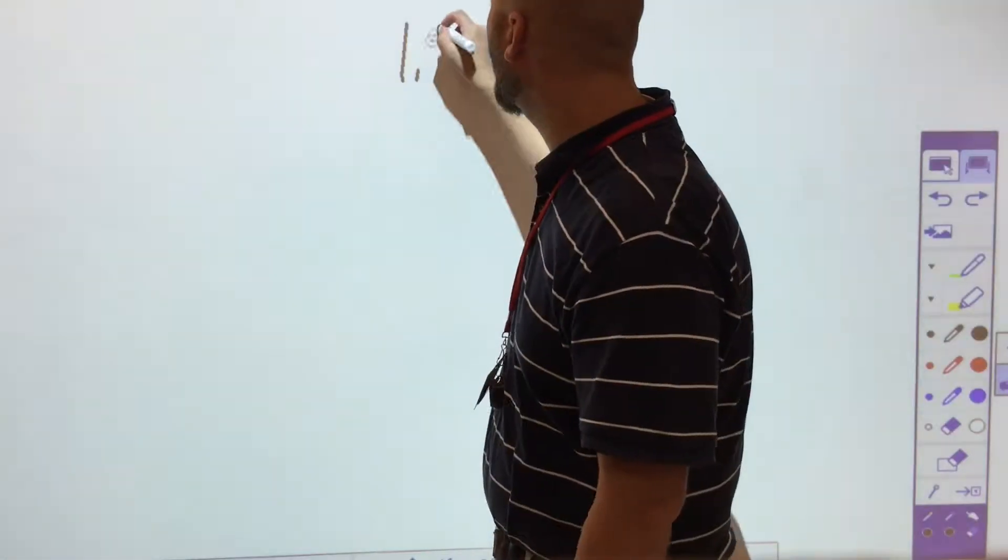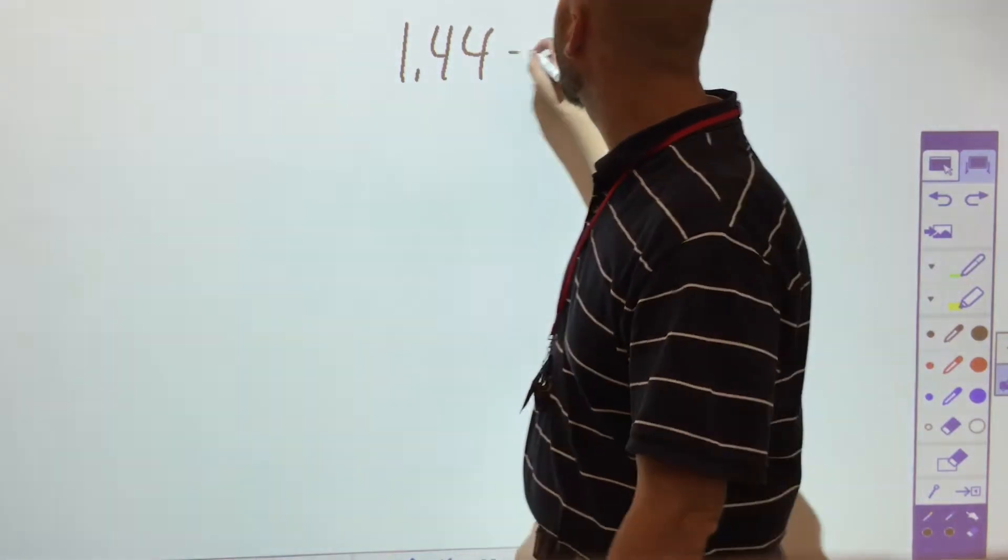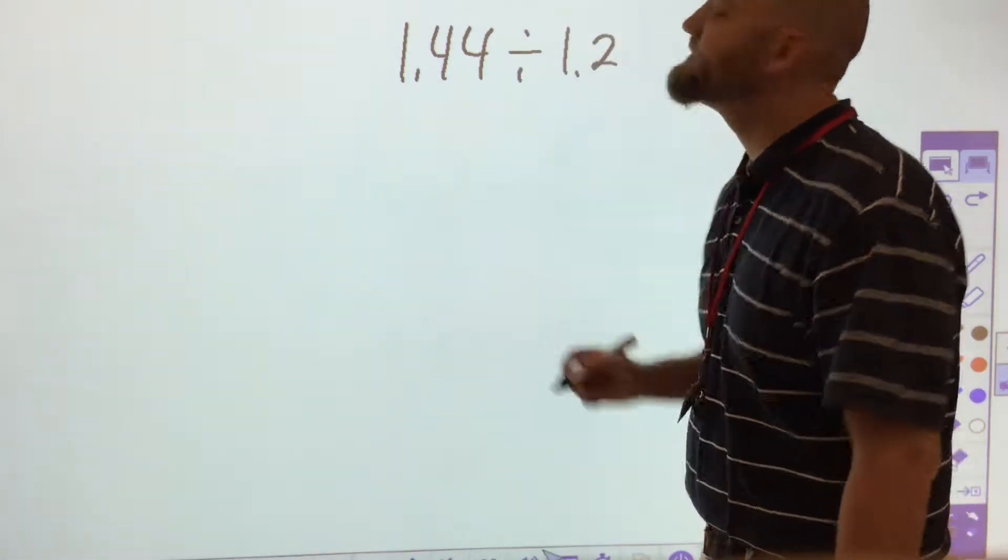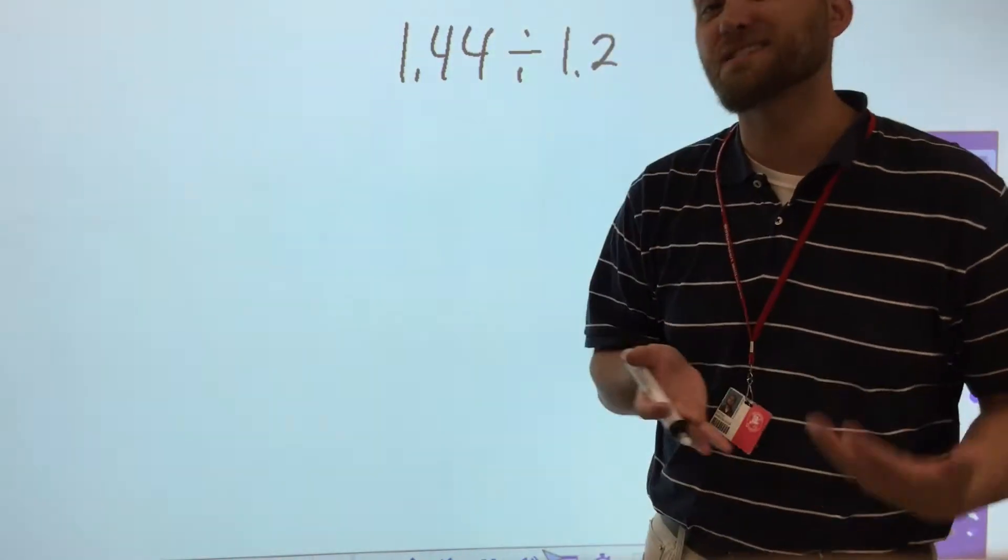First thing we want to do is set up our problem normally and of course bring in our estimation. The estimation is always a crucial part of what we're doing. So if I wanted something like 1.44 and I want to divide it by 1.2, I have two numbers that are decimals here. The first thing that I want to do is set up my estimation.